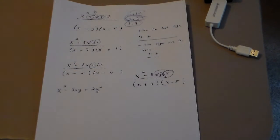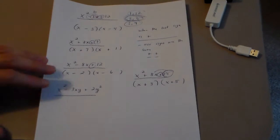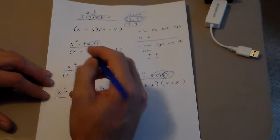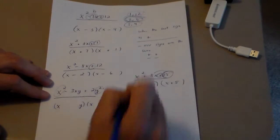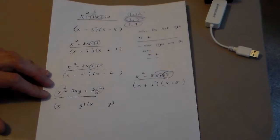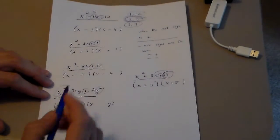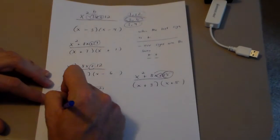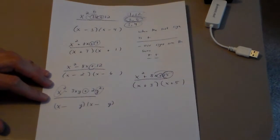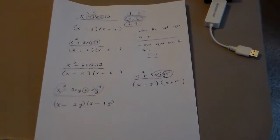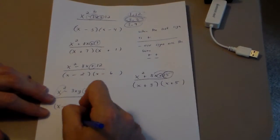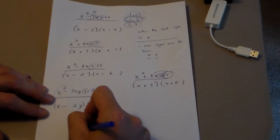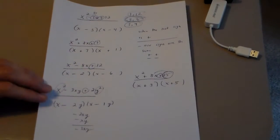Sometimes you'll see problems with two different variables. I see a y squared and an x squared here. Most of the time that means we'll have an x and an x, and a y and a y in our binomials. That last sign is positive, so the signs are the same. That middle sign is negative, so they're both negative. Factors of 2: since 2 is prime, it's 2 and 1. This times this gives negative 2xy, this times this gives negative 1xy, and adding those gives the negative 3xy we needed.